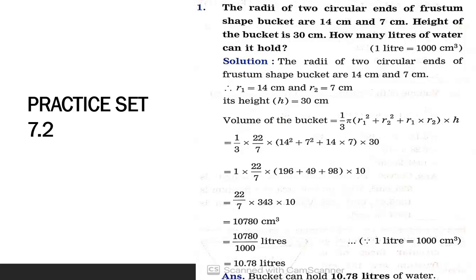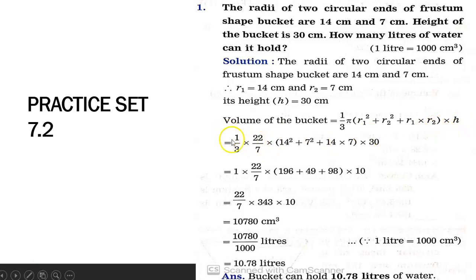The radii of the two circular ends are 14 and 7. Since the bigger value is always R1, we take R1 = 14 cm and R2 = 7 cm. Height H = 30 cm. We have all the required information. The formula for volume of the Frustum is: V = (1/3)π(R1² + R2² + R1×R2) × H.